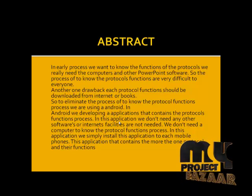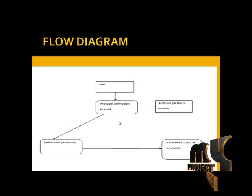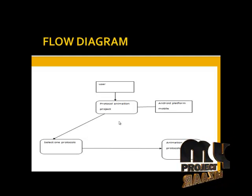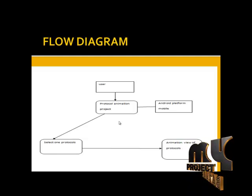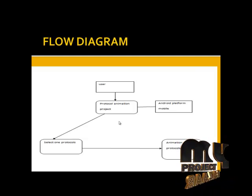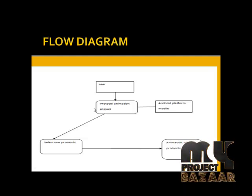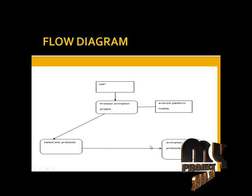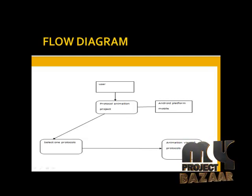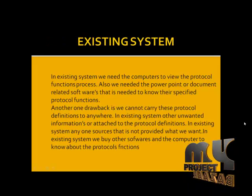Let's see the data flow of this project. First, the user installs this application on their mobile phone. After installing, the project contains a home page with different protocols listed. The user selects any one protocol, and then the animation view of that protocol will be displayed. This application runs on the Android platform. The home page contains many protocols like SMTP, FTP, and UDP.